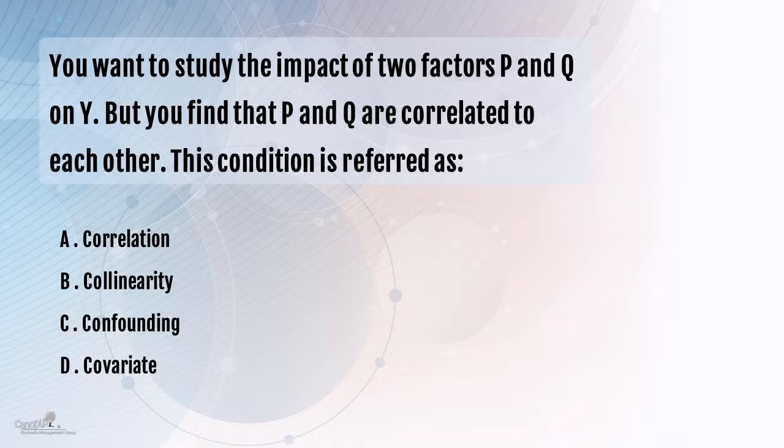The answer is collinearity — there is no doubt about it. To understand what the other terms mean, let's go a little further. When there is collinearity between P and Q, the result of this collinearity can lead to a phenomenon called confounding. Confounding is a situation where the relationship between Y and P is distorted because of the strength of the relationships between Y and Q, and/or P and Q.